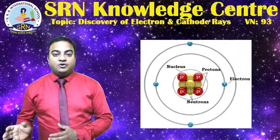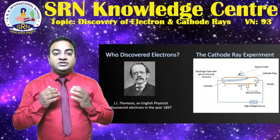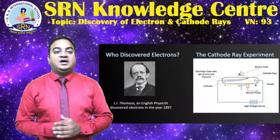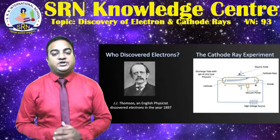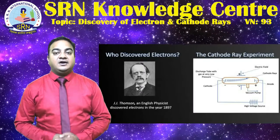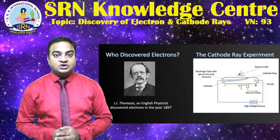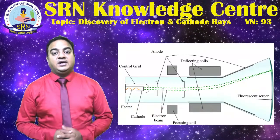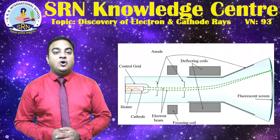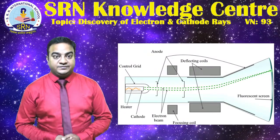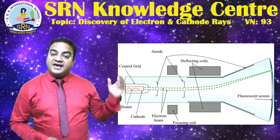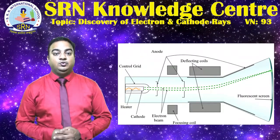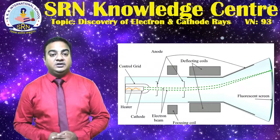Let us now study about the electrons and cathode rays. J.J. Thomson observed that when a high voltage is applied between the electrodes fitted in a discharge tube at a very low pressure, some invisible radiations are emitted from the cathode. At this stage, the wall of the discharge tube near the cathode starts glowing. This glowing in the discharge tube is due to the bombardment of the glass wall by the cathode rays. It may be noted that when the gas pressure in the tube is about one atmospheric pressure, the electric current does not flow through the tube, because gases are poor conductors of electricity.